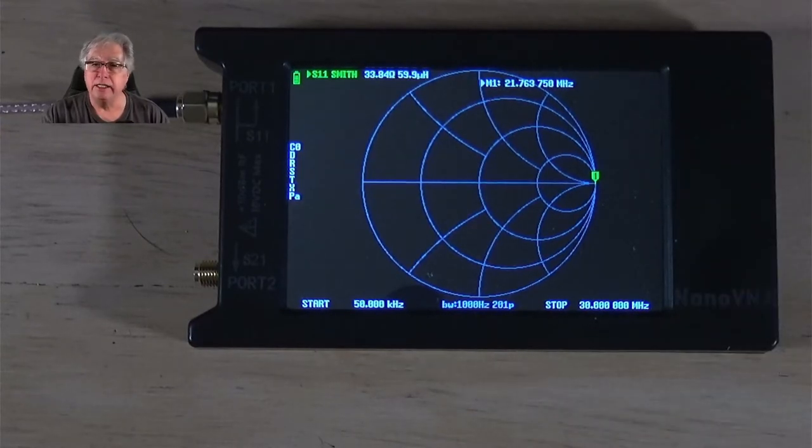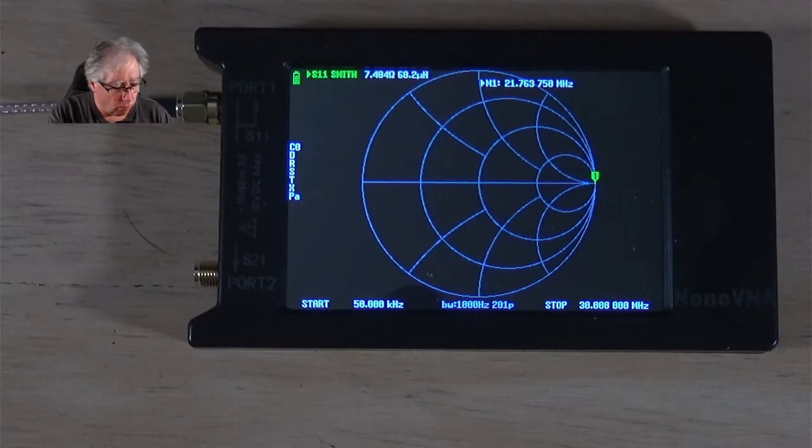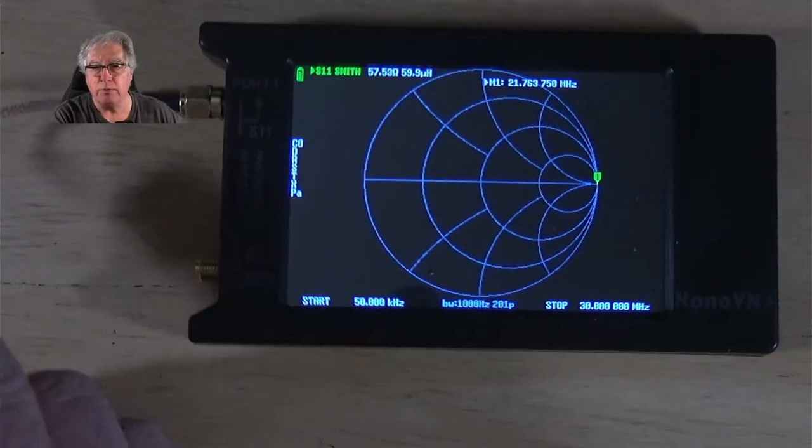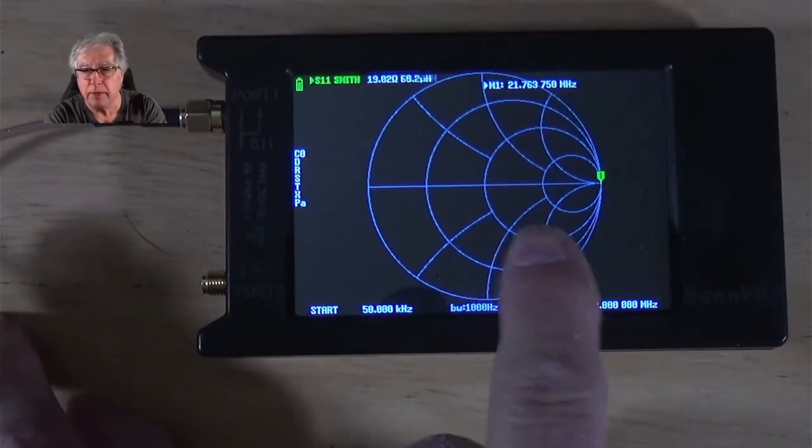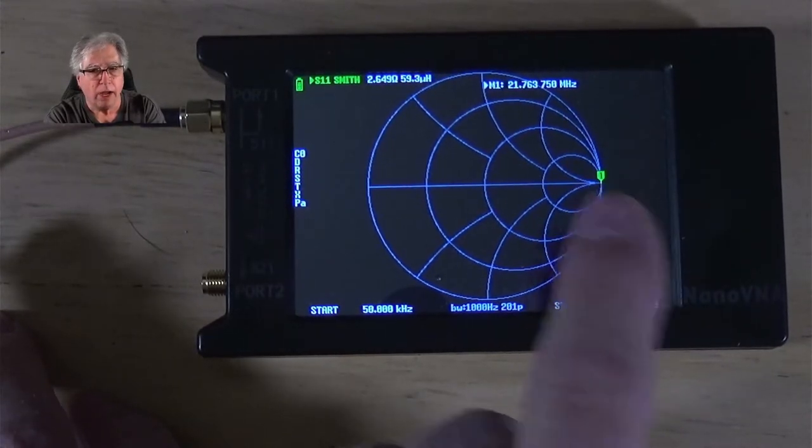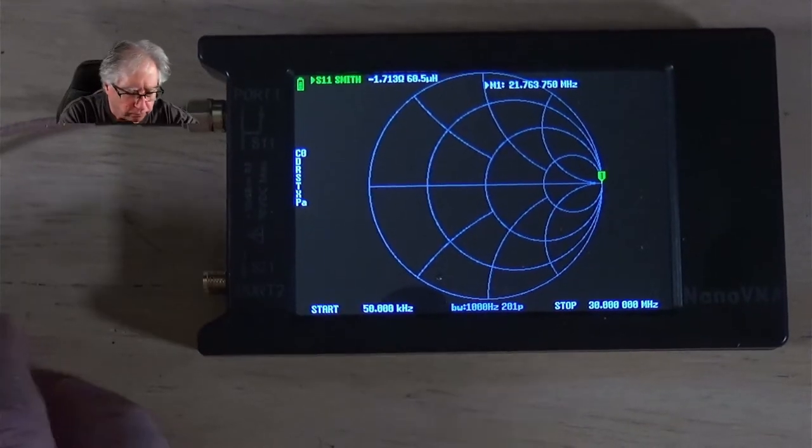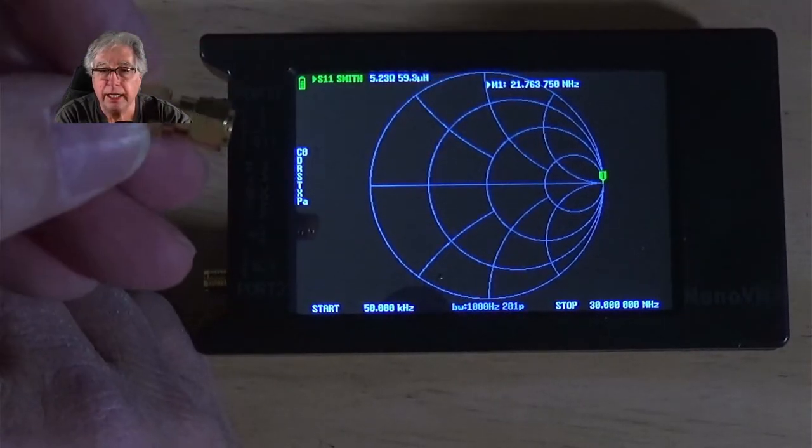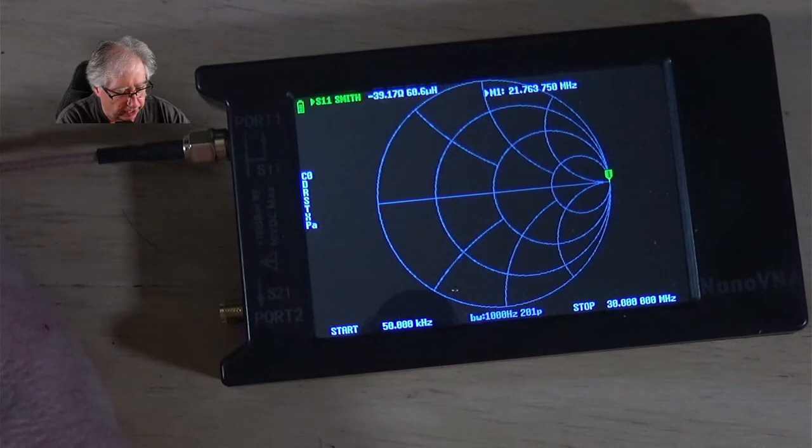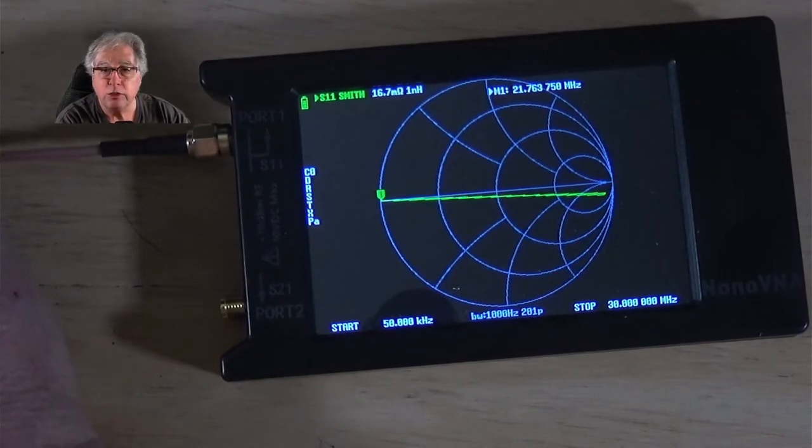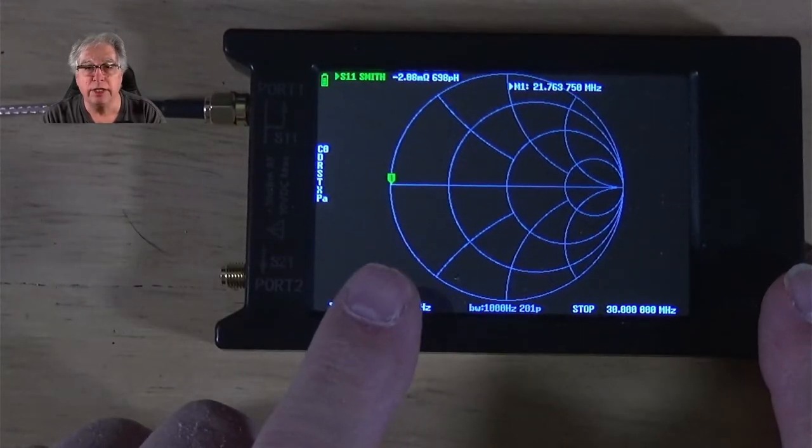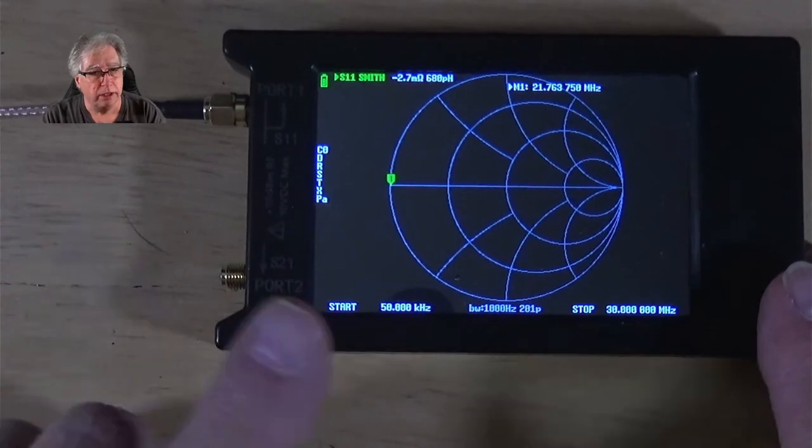And the way that you do that is right now I have an open on one end here. Let me bring it up where you can see it. This is open, okay? And you can see that my point is right there at the very, very far right of the Smith chart. I'm going to put a short on the end of this. And let's see what happens when I do that. You see that the short now, once it's settled down, has moved all the way over here to the far left of the Smith chart.